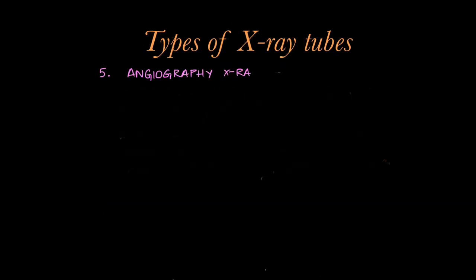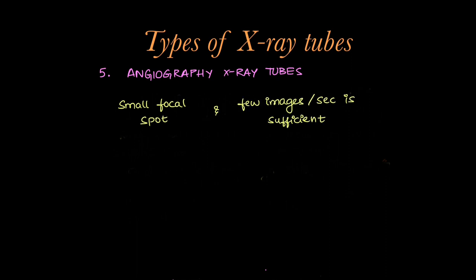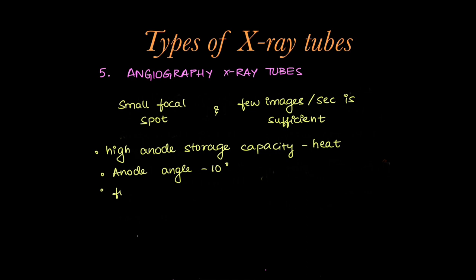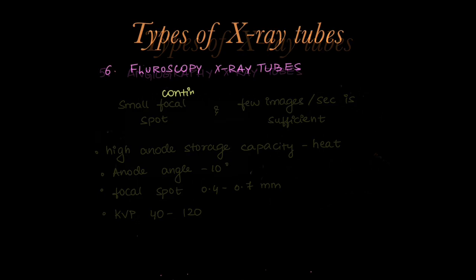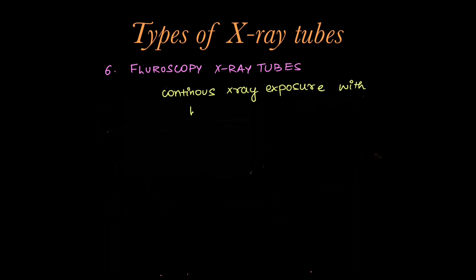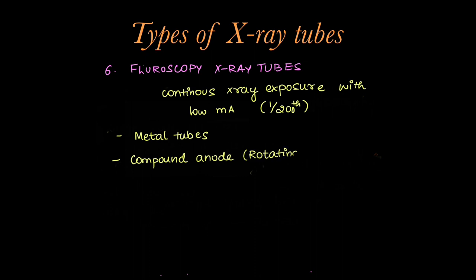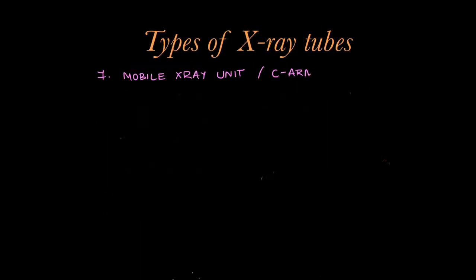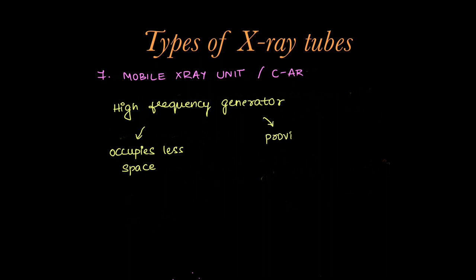Coming to x-ray tubes used in angiography or DSA machines or C-arms: a smaller focal spot is required for resolution, and few images per second are sufficient. High anode storage capacity is required for heat dissipation. Anode angle is up to 10 degrees, focal spot is very small at 0.4 to 0.7 mm, and kVp is 40 to 120. In fluoroscopy x-ray tubes, continuous x-ray exposure is required with low MA — 1/200th of normal x-ray tube MAS is used. Metal tubes are used with a rotating anode made of compound material. In mobile or portable x-ray units, high frequency generators are used which occupy less space and provide constant potential.